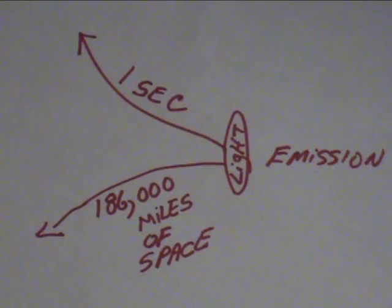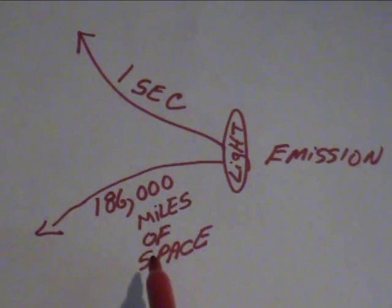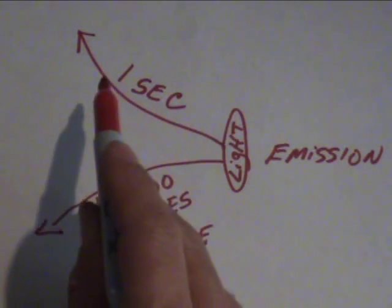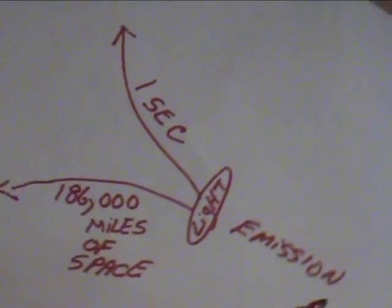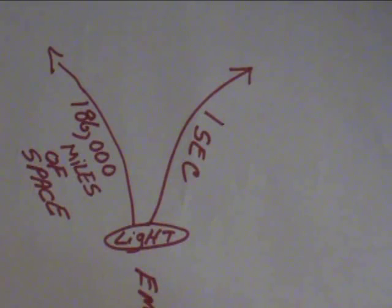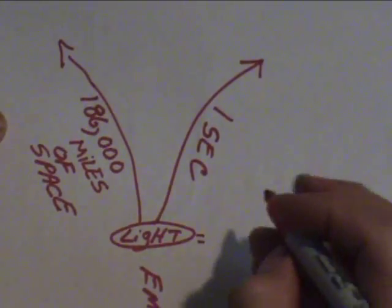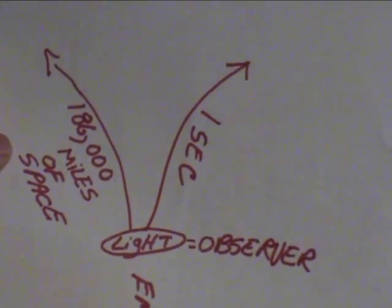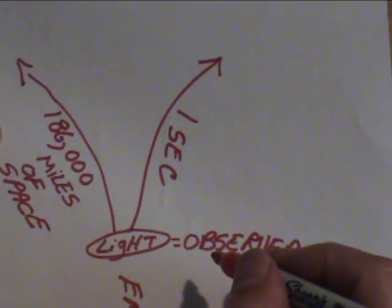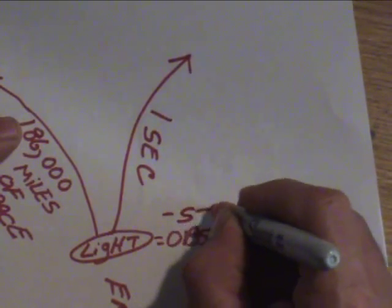What if the emission of light is actually the expansion of 186,000 miles of space at one second, instead of light? In other words, light is the stationary observer instead of the observed. For example, light equals observer.